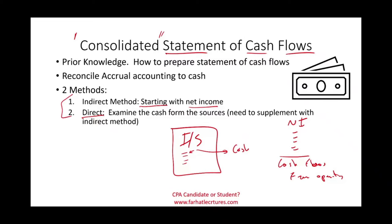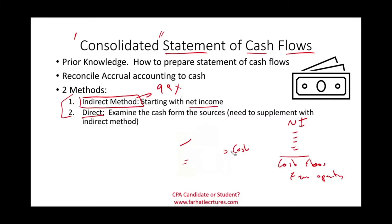The direct and indirect method only applies to the operating section. In the US, 99% of companies use the indirect method. If you do use the direct method, you still have to supplement it with the indirect method.